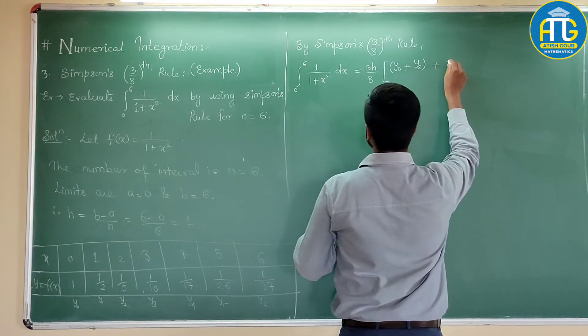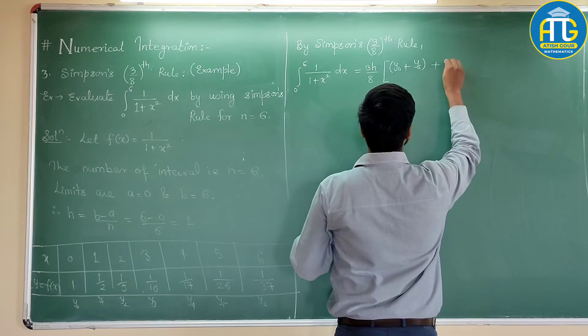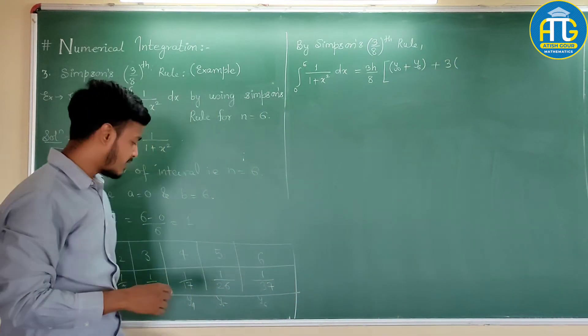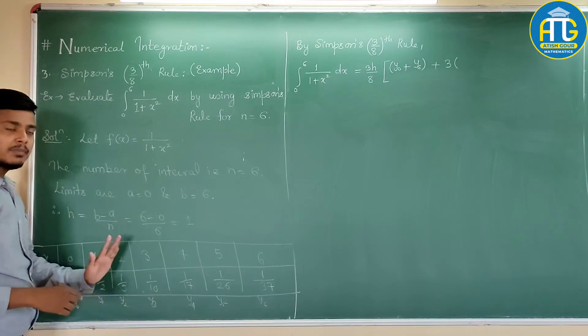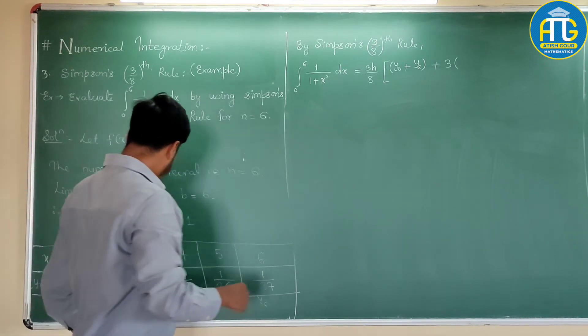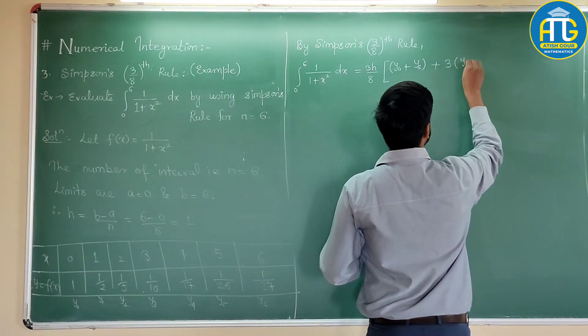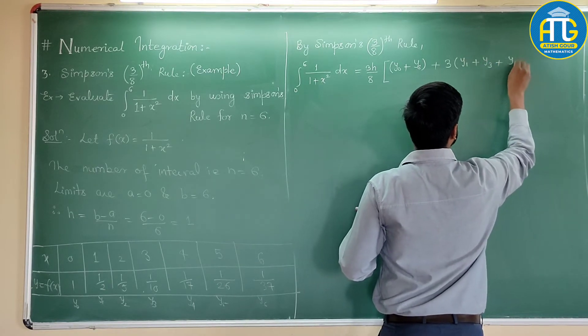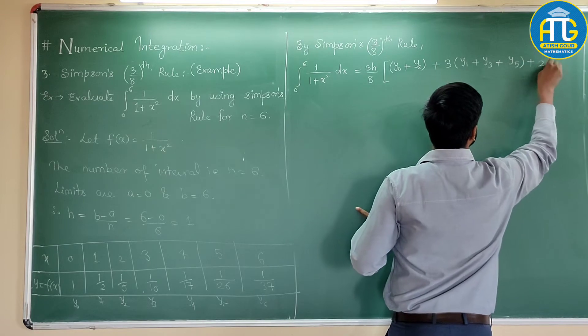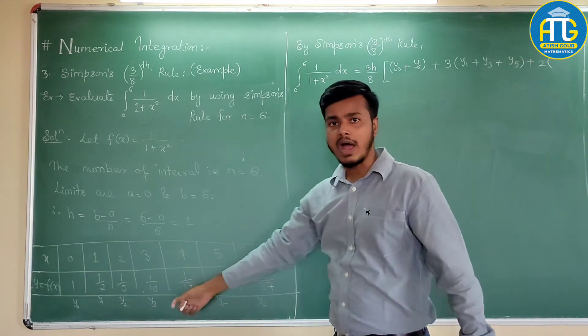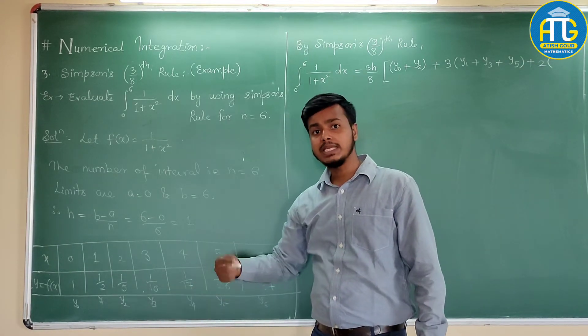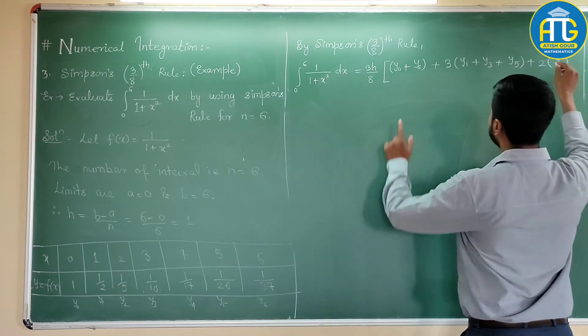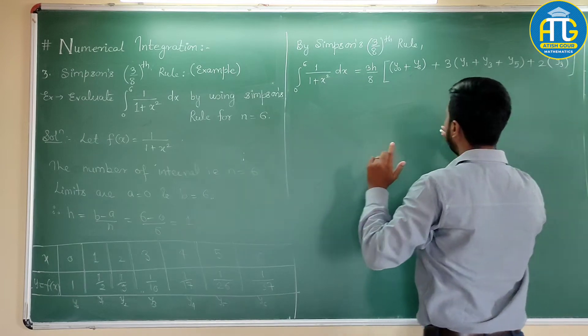Then what is it? Then you have 3 as a multiple of suffixes which are not multiple of 3. That is, 3 times y1, y2, y4, y5 plus 2 times the values of y with suffixes multiple of 3. That is, y3 only. Y6 we have already taken over here.